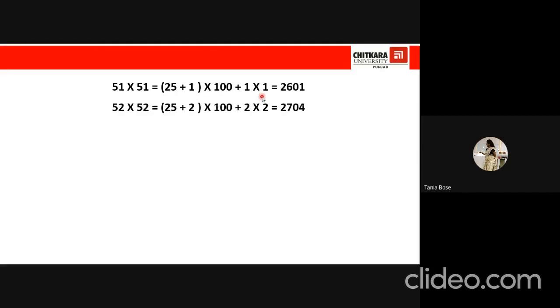Next, 52 into 52, it's been written as 25 plus 2 into 100 plus 2 into 2. So our product is 2704. See, if I multiply 52 into 52, it is cumbersome for those who are not from maths. But if I just look at this pattern, 25 plus 2 is 27. So the product will become 2704, and I can easily add 4 to it. So my result is 2704.